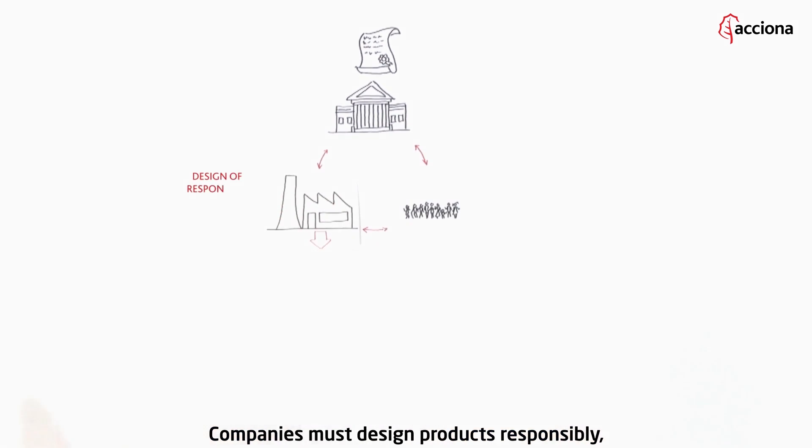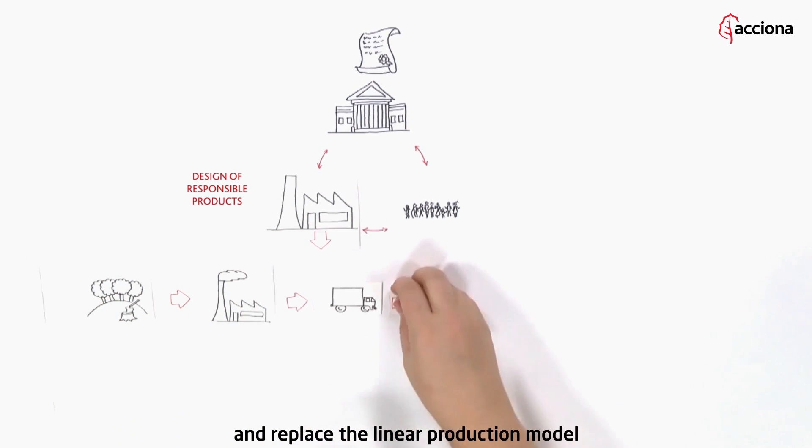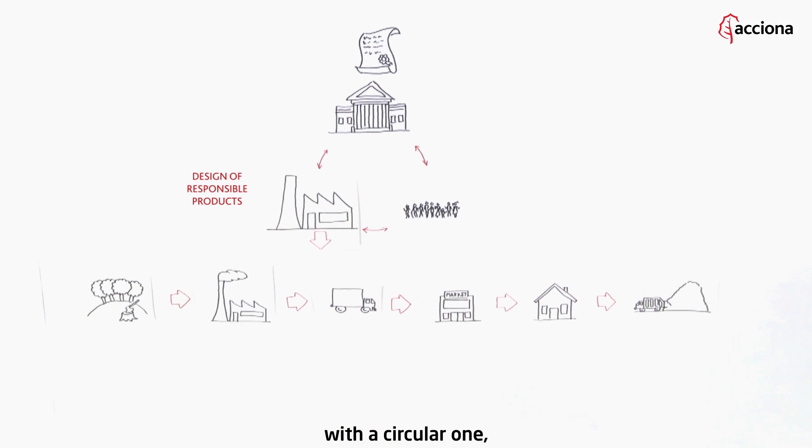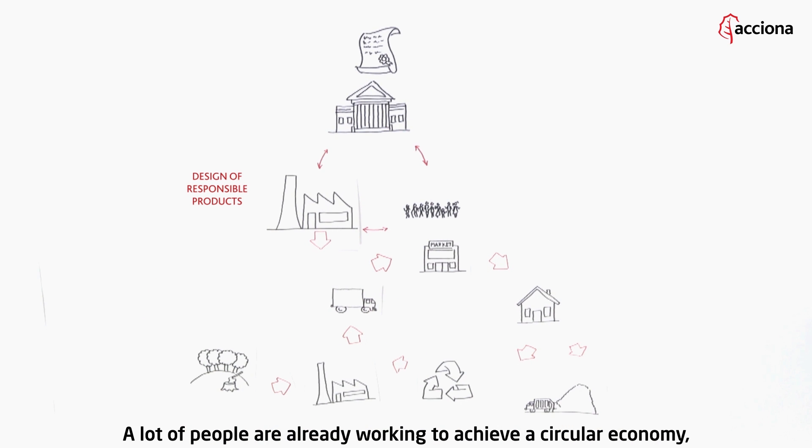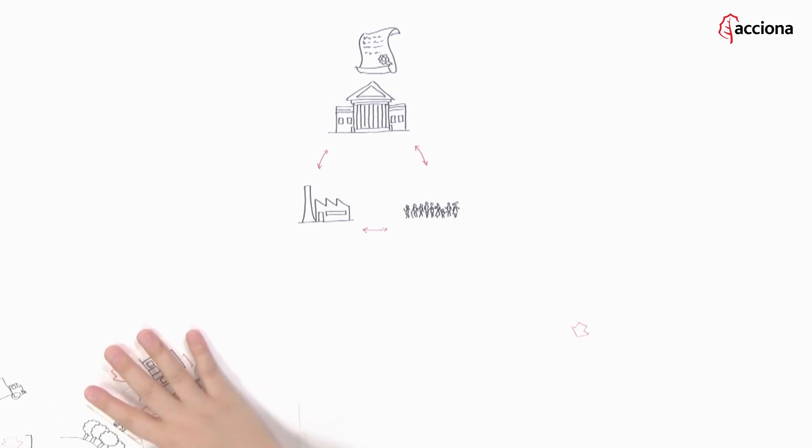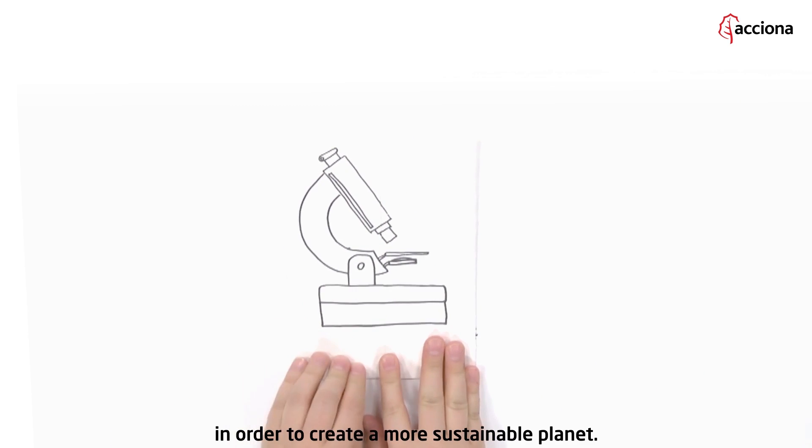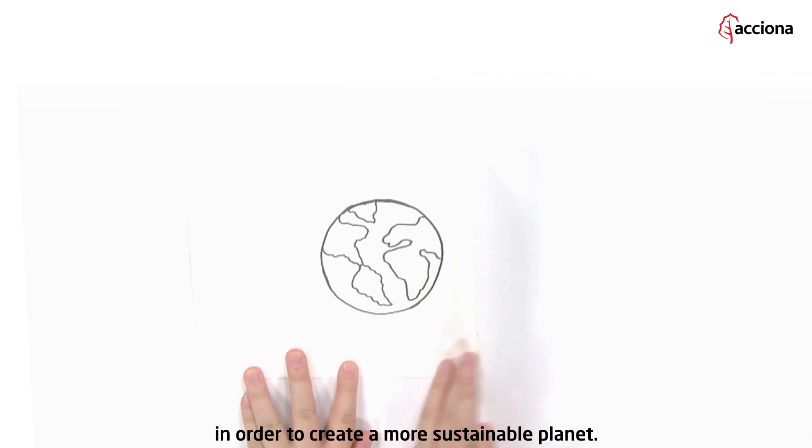Companies must design products responsibly and replace the linear production model with a circular one, in which obsolete products are repaired and reused. A lot of people are already working to achieve a circular economy, but it is necessary to keep on innovating in order to create a more sustainable planet.